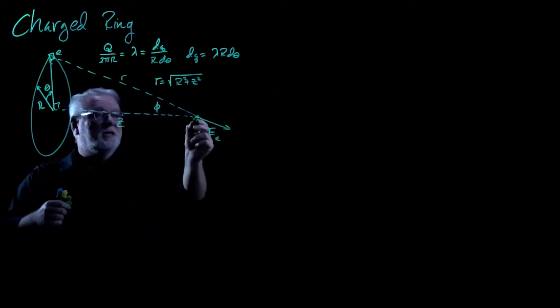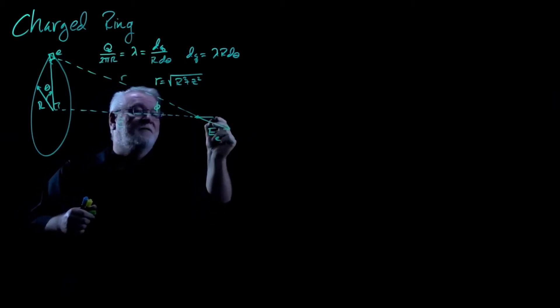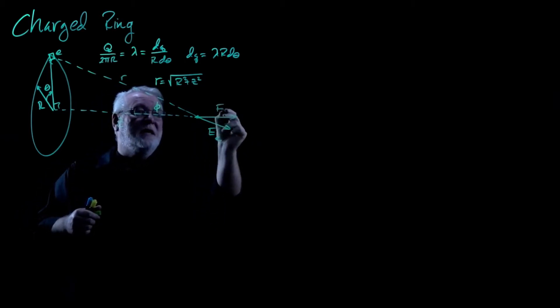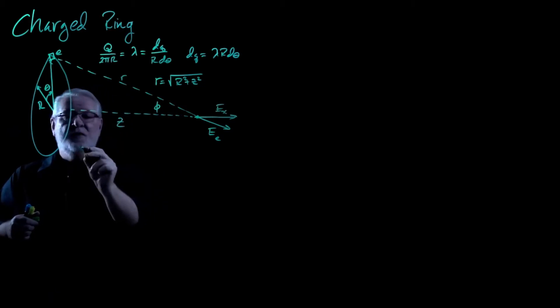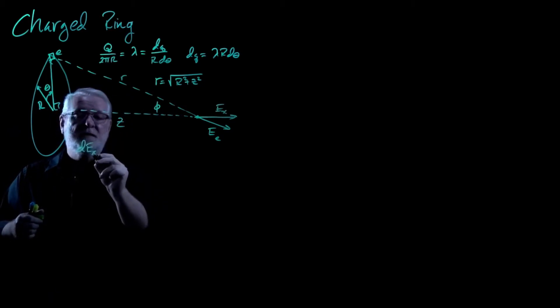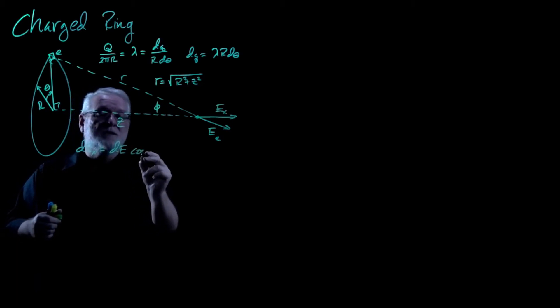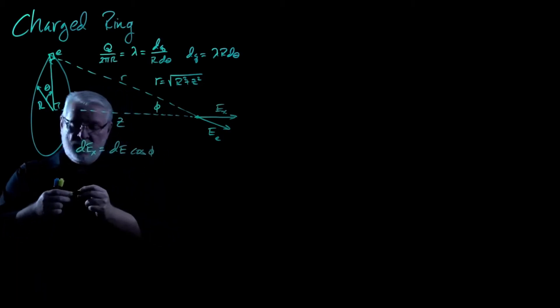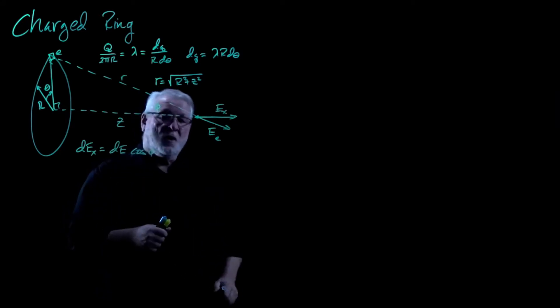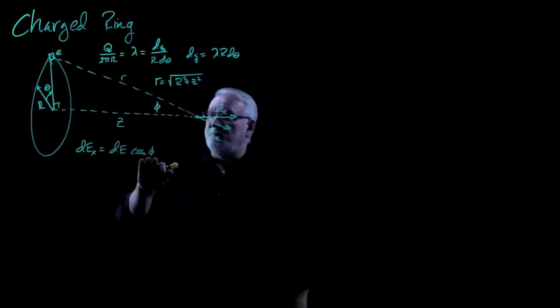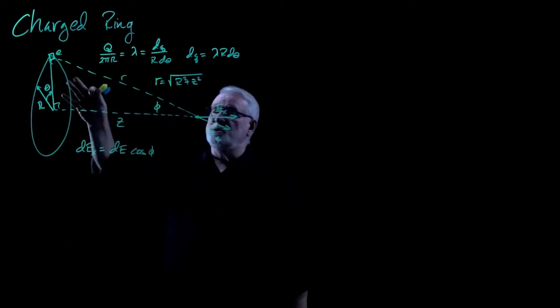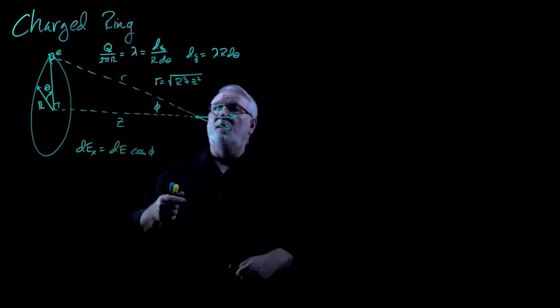So if I want just the X component of all of these E's, this guy right here, EX, all of them, then dEX is going to be equal to dE, the overall integral, times the cosine of phi. Well, the problem is even though the cosine of phi is going to be a constant, I would much rather express it in terms of the geometry of the problem. After all, look, my radius is in terms of R and Z. My DQ is in terms of R. I'd like this to also be in terms of R and Z. And of course, that's very easy.